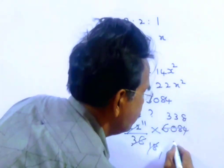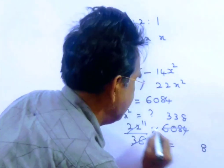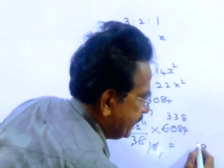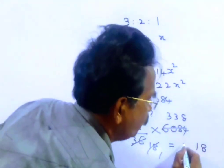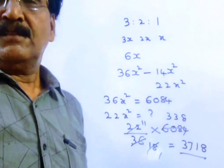18 eights, so 11 into 338. 11 eights, 88. 11 threes, 33 plus 8, 41. 11 threes, 33 plus 4, 37. 3718. Thank you.